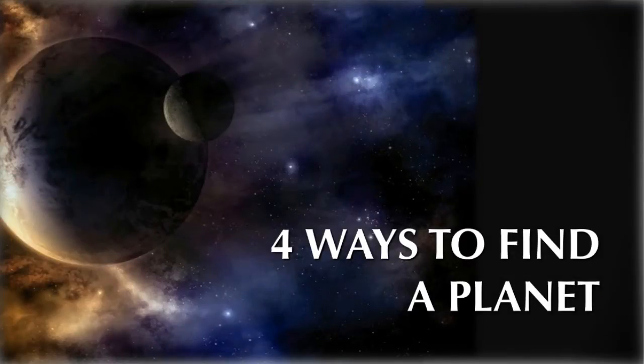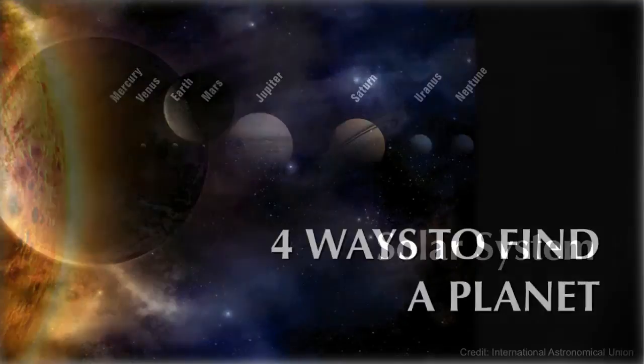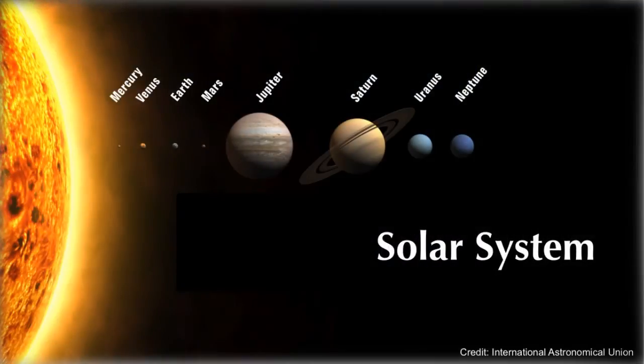Throughout most of the 20th century, astronomers were aware of eight planets orbiting our solar system. We had Mercury, Venus, Earth, and Mars, the rocky planets in our solar system.